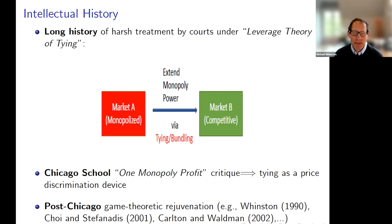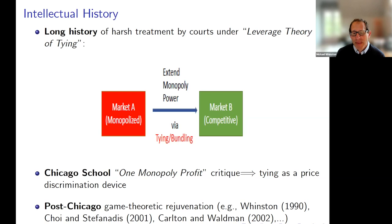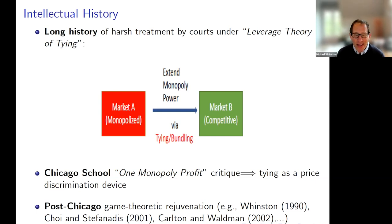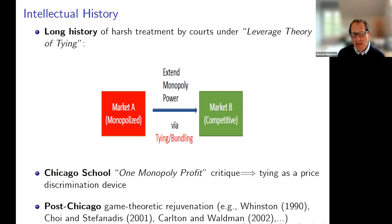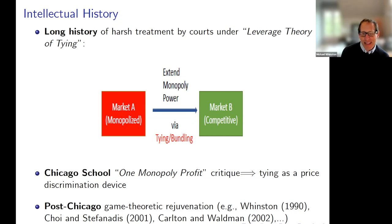The Chicago school critiqued this with what became known as the one-monopoly-profit critique — that is, you can't extend your monopoly power to gain two monopolies. I've always thought of it as a real demonstration of how powerful theory can be: they had very simple examples and theoretical models, but they made this point and it ended up being extremely influential.